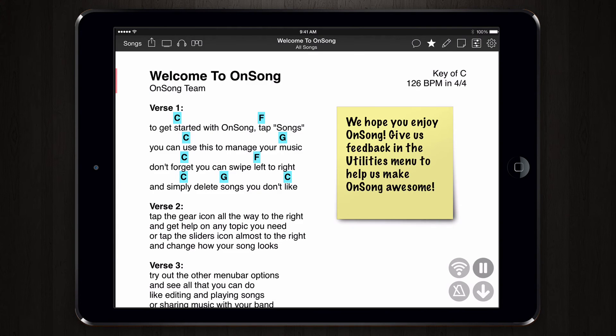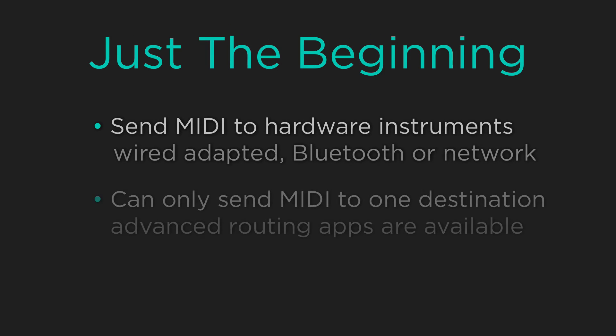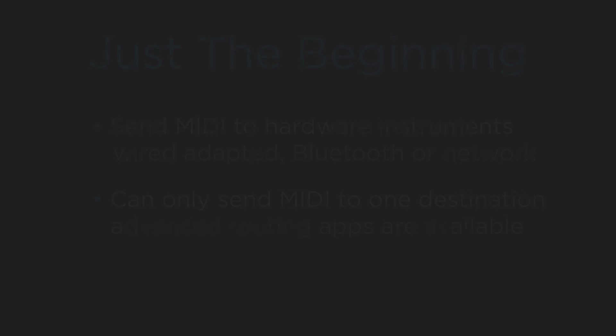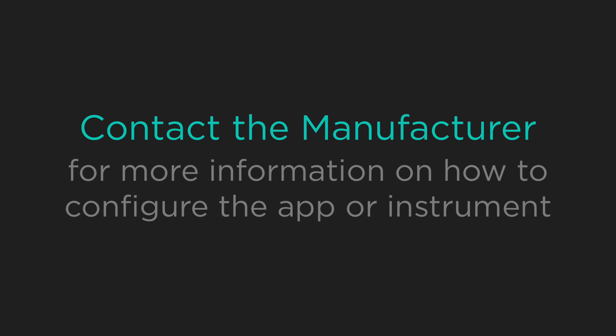Of course, this is just one option. You could also send MIDI to hardware instruments using wired adapters, Bluetooth dongles, or network sessions. While OnSong can only send to one destination for MIDI playback, there are even apps that can route your MIDI for more advanced setups. We recommend contacting the manufacturer or vendor of the instrument you plan to use for more information on how to configure it using MIDI.